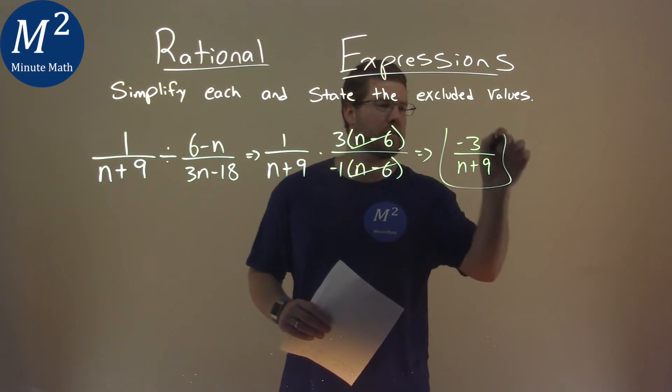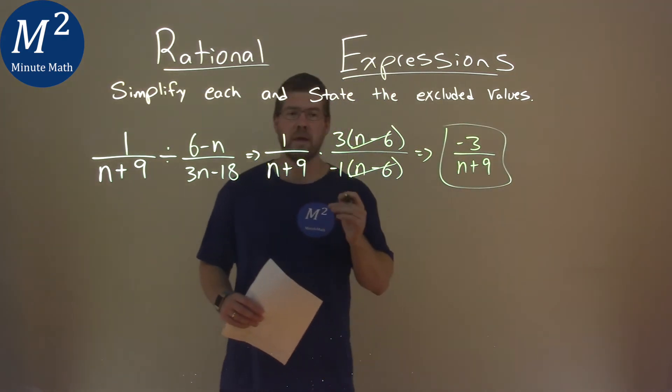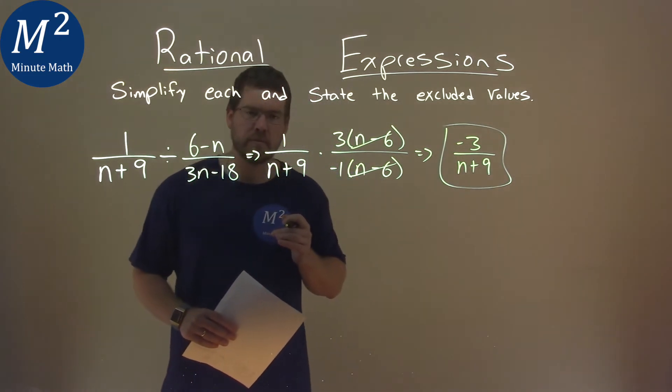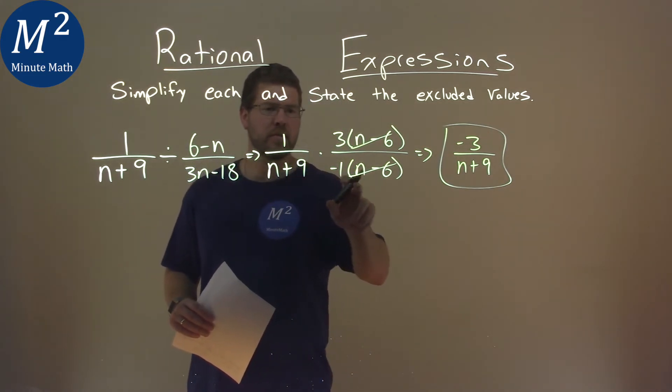And so my simplified expression is negative 3 over n plus 9. But we need to find the excluded values. So we take the denominator here in the second part, right, what's the actual denominator...